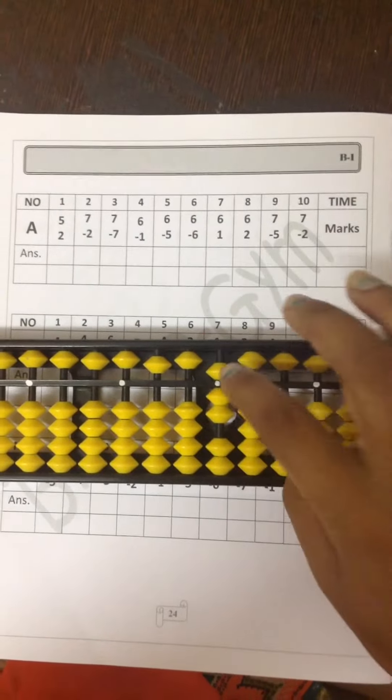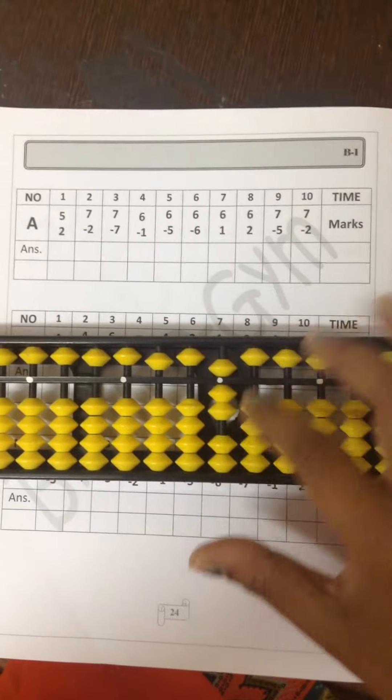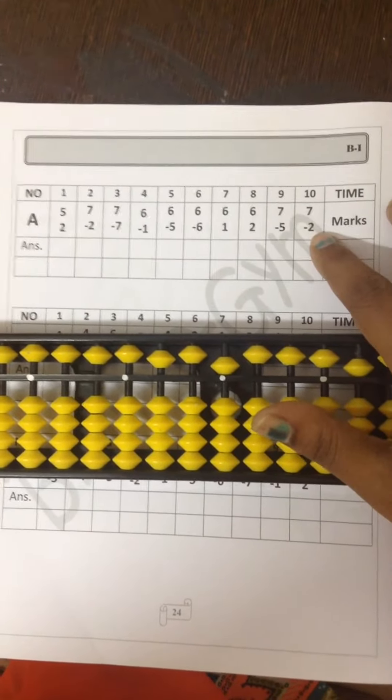7 minus 5. The answer is 2. 7 minus 2. The answer is 5.